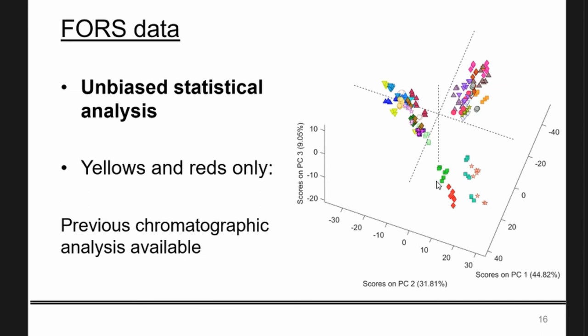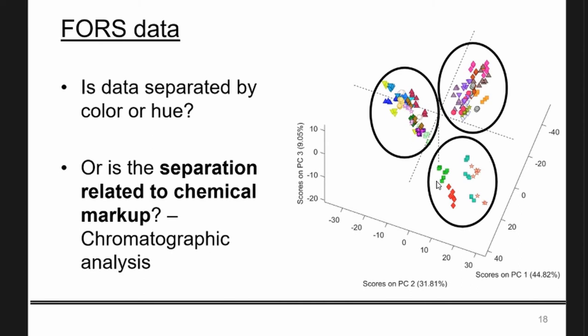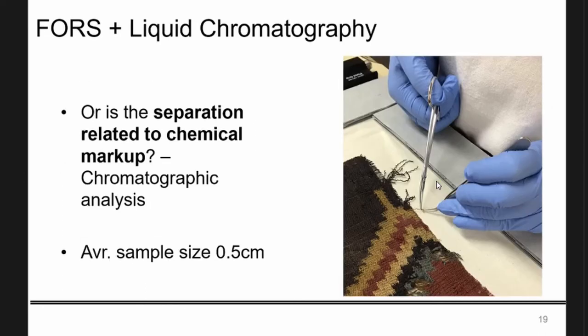We chose to start with yellows and reds because, among other things, they have been analyzed previously. Keep in mind that I'm showing you just two colors — yellows and reds — yet we very easily find three groups. The questions are: are they related to hues, or are they related to chemical makeup? Because we were really hoping it was related to chemical makeup, we went back to Bryn Mawr College and this time did micro-destructive sampling and liquid chromatography on 18 textiles, taking two samples each — one yellow and one red.